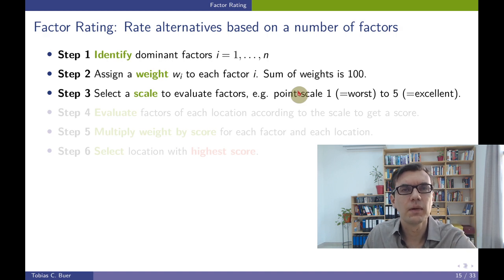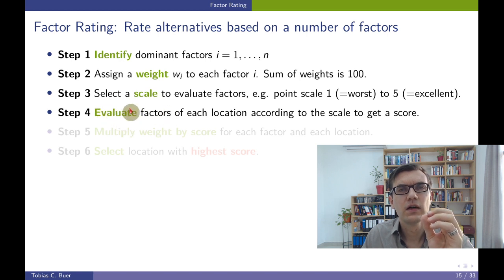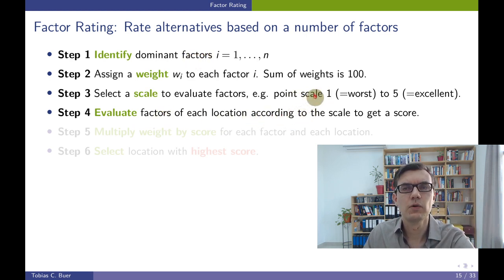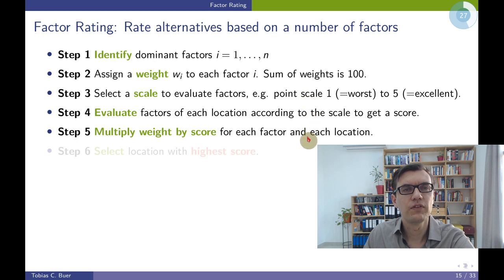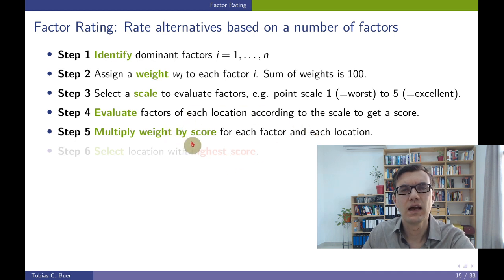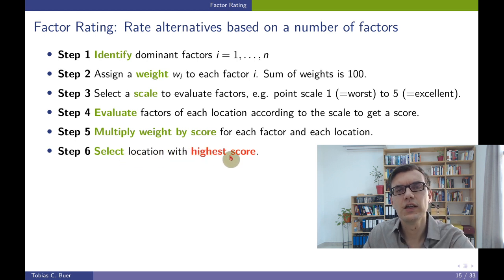For example, in coursework assessments I assign points between 1 and 100. In step number 4, we actually look at each location and evaluate — we rate each factor and give it one value from our point scale. In step number 5, we multiply the weight with the score and add this up for each location. In the end, we select the winning location — the one with the highest score — as the location where we want to establish our facility.